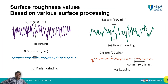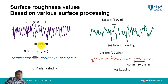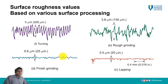Let us look at surface roughness values based on various machining operations. Turning generates a surface roughness average value of about 5 microns, which is quite rough, with significant variation in peaks and valleys. Rough grinding produces about 3.8 microns; there is less variation than turning but at intermittent distances you can still see some deep valleys.